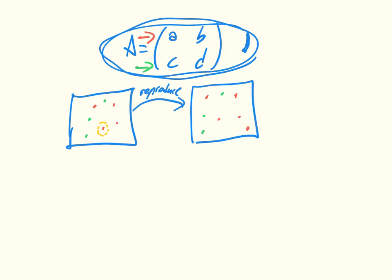Now we have another selection step, but this one is selection for death, and this would be completely random — nothing to do with the fitness of the individuals. So for example, let's say this individual here was selected for death.